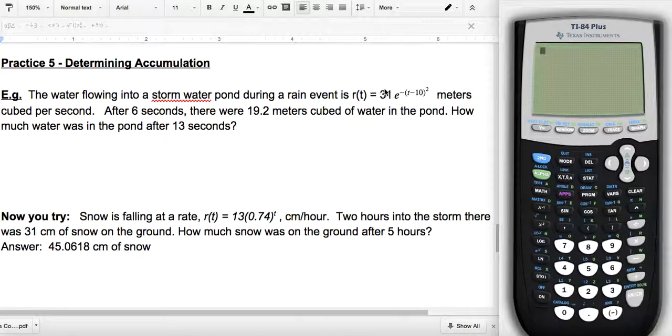So it looks to me this right here is your derivative, right? R of T is your rate. And it says after six seconds or 19.2 meters cubed, not per second, but meters cubed. So it seems to me that if I look at the y-axis for R of T is meters cubed per second, the x-axis is seconds. So if I multiply those, I get meters cubed, which makes sense. So it's my integral.